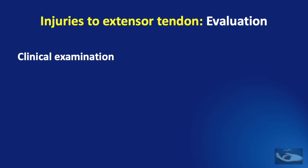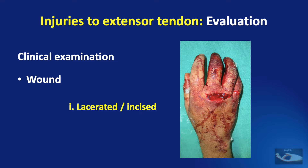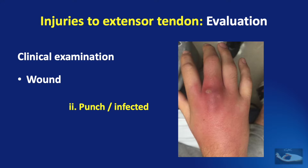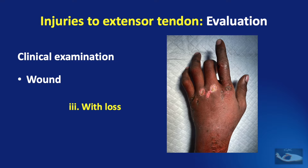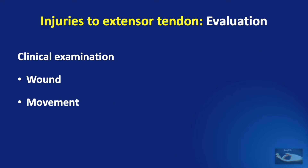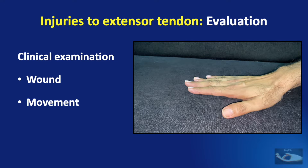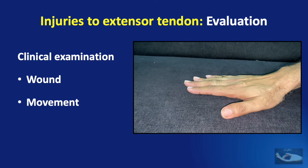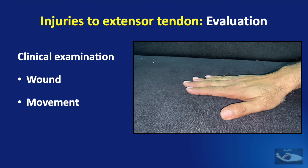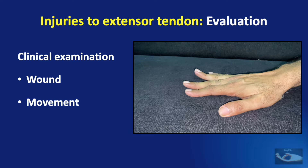The evaluation of the tendon injury must begin with a good clinical examination. Examination of the wound will show it to be one of three types: a lacerated or incised wound, a punch wound otherwise known as a fight-bite injury, an infected wound, or a wound with skin loss which may involve tendon loss also. In testing movements for extensor tendon injury, the hand must be kept flat on the table with the palm downwards and the patient asked to lift the tested finger — index, middle, ring and little fingers.